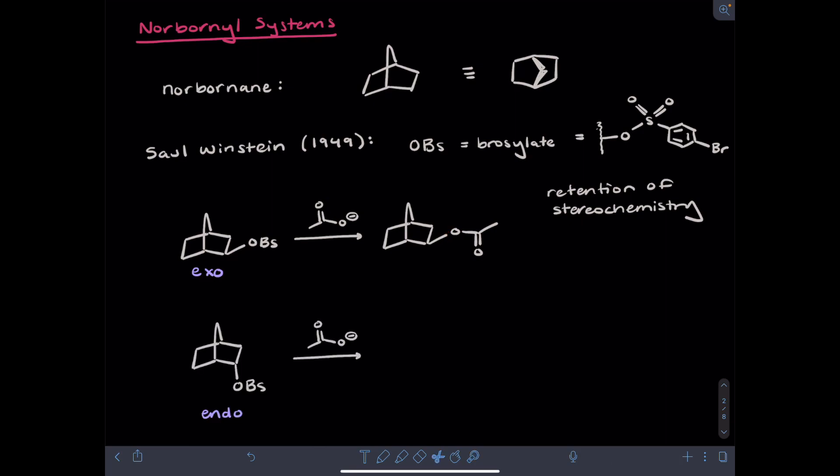Winstein also performed the same type of reaction, starting with the endo starting material, where relative to the CH2 bridge, the leaving group points down and away from that bridging group. Interestingly, starting with the endo starting material gives the same product as you got in the exo case. So here an inversion of stereochemistry has occurred in the substitution reaction.